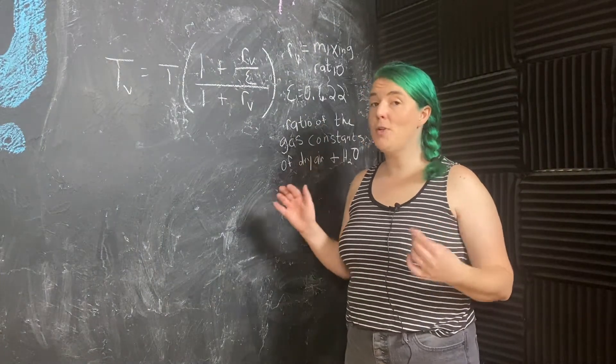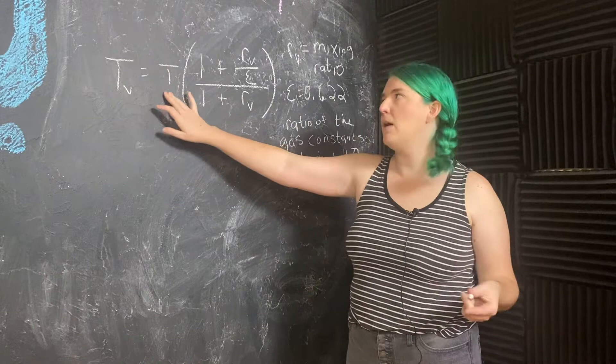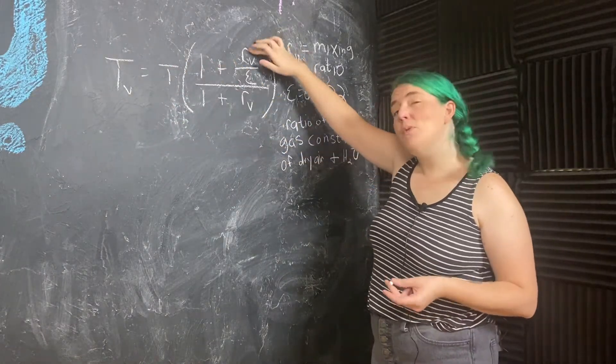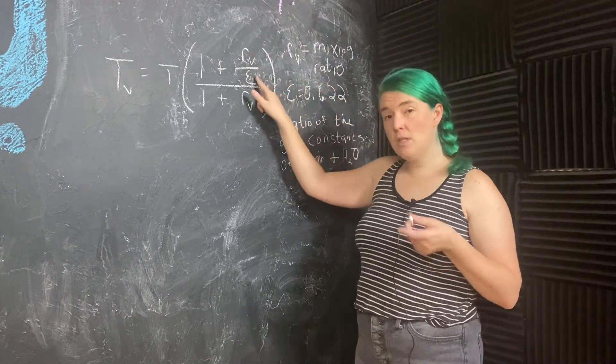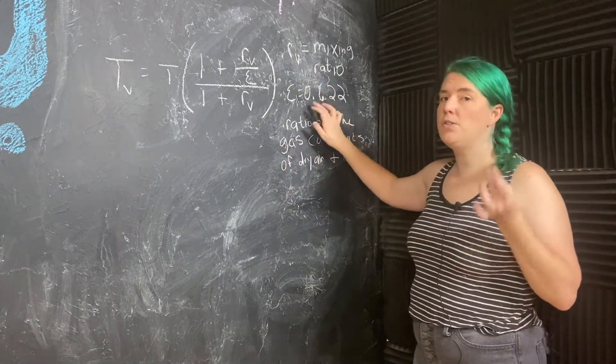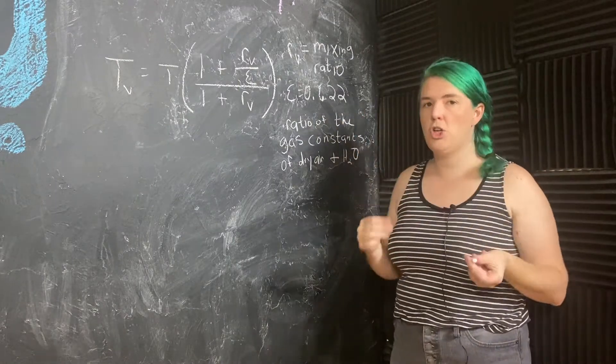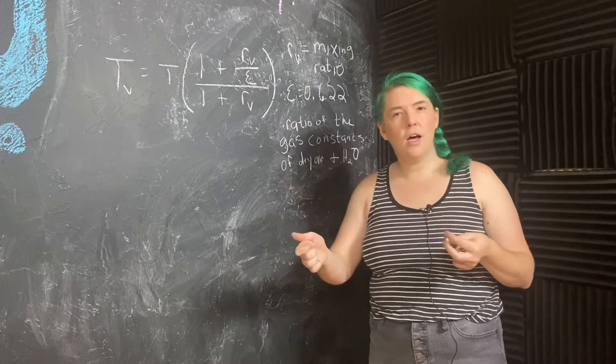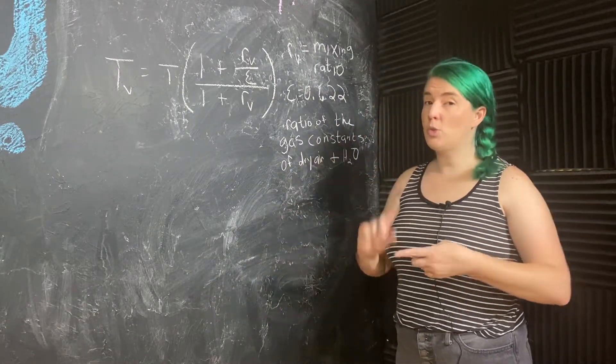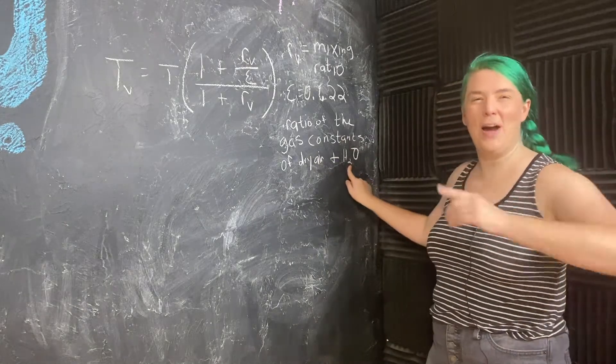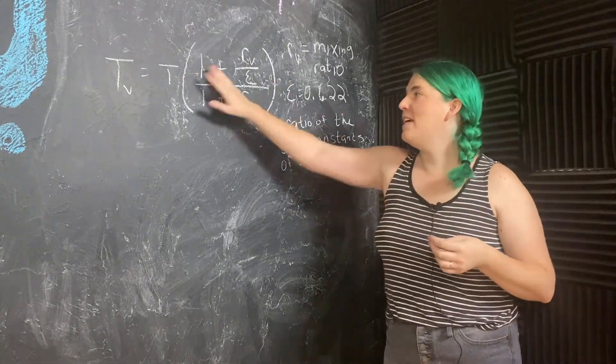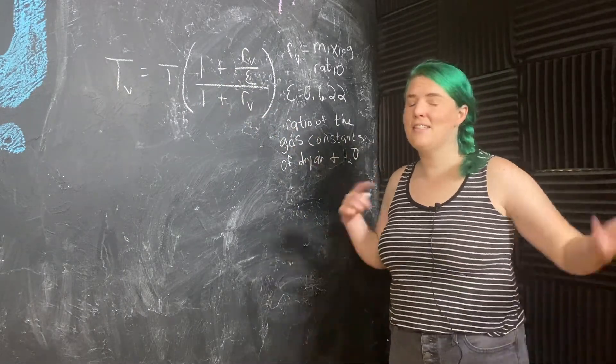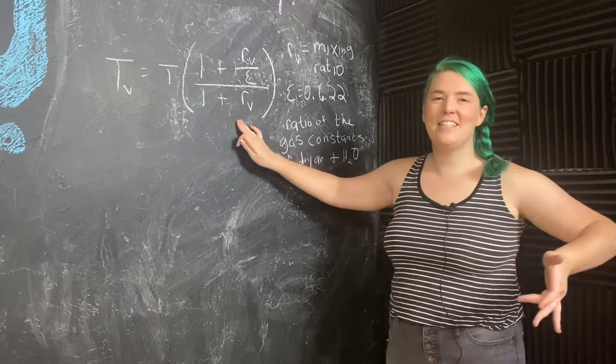So virtual temperature is actual temperature of the air parcel times one plus mixing ratio divided by epsilon, where epsilon is a constant—it's 0.622—and it is the ratio of the gas constant, so that R from the ideal gas law, the gas constants for dry air and water vapor. That's why I wrote this down. And then all of this is over one plus mixing ratio. So that's math, but this doesn't necessarily give us a conceptual understanding.